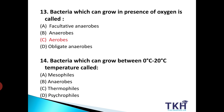Next, question number 14: bacteria which can grow between 0 to 20 degree centigrade temperature are called — जो 0 to 20 degree centigrade के बीच में grow कर सकते हैं उस bacteria को हम क्या कहेंगे? Option A: Mesophils. Option B: Anaerobes. Option C: Thermophils. Option D: Psychrophils. And the answer is Option D: Psychrophils.